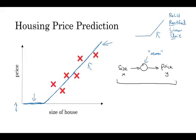So if this is a single neuron, neural network, really a tiny little neural network. A larger neural network is then formed by taking many of these single neurons and stacking them together. So if you think of this neuron as being like a single Lego brick, you then get a bigger neural network by stacking together many of these Lego bricks. Let's see an example.